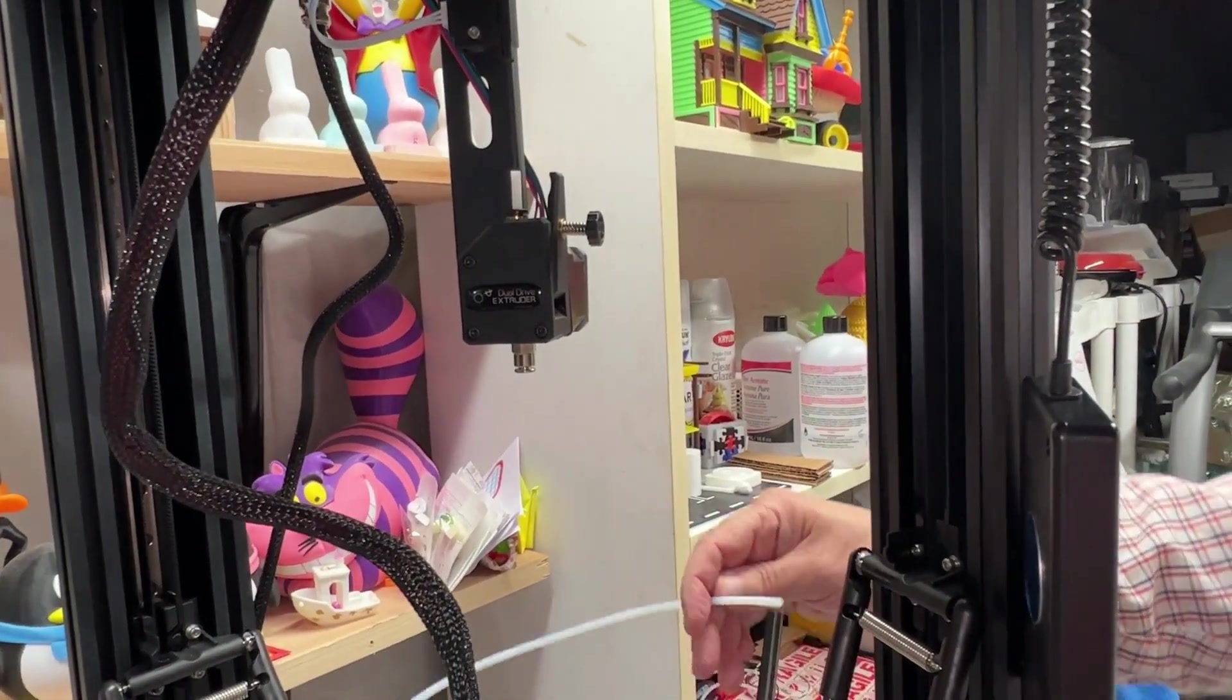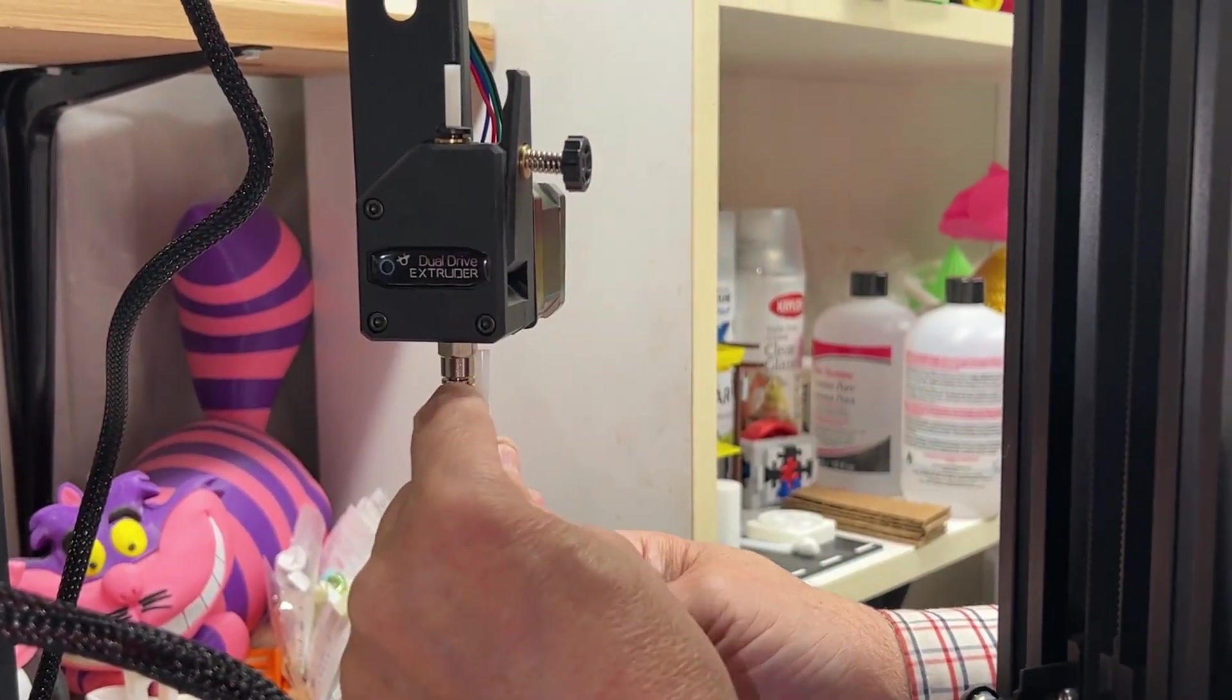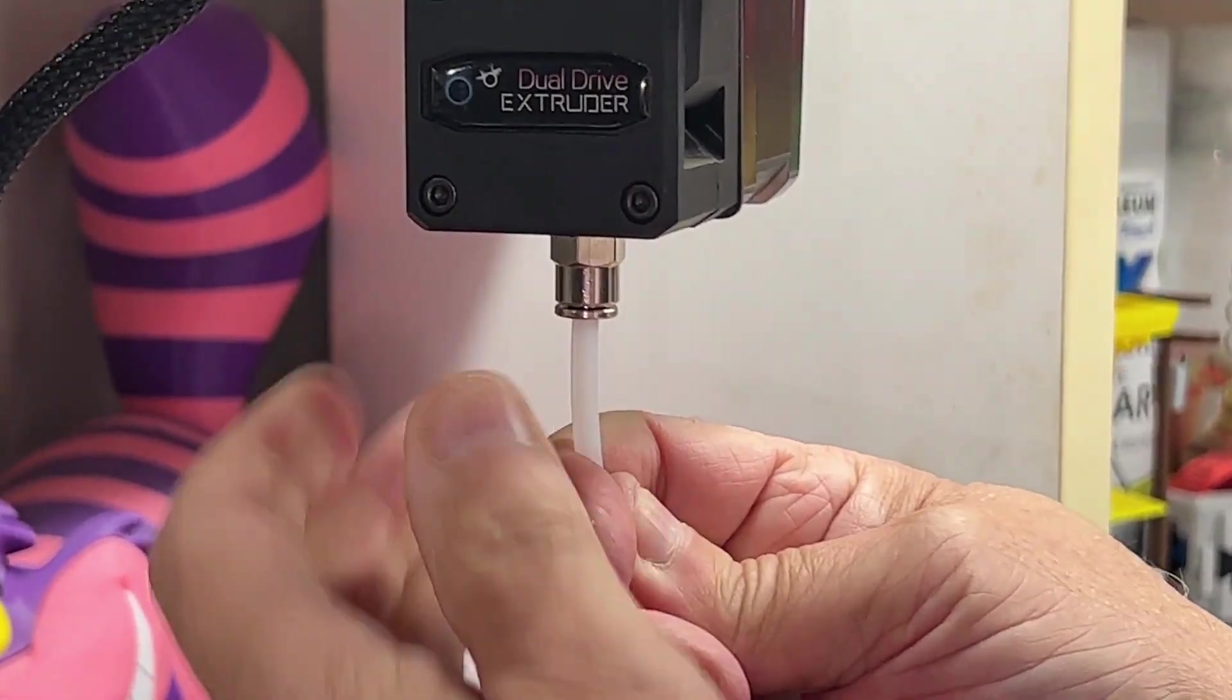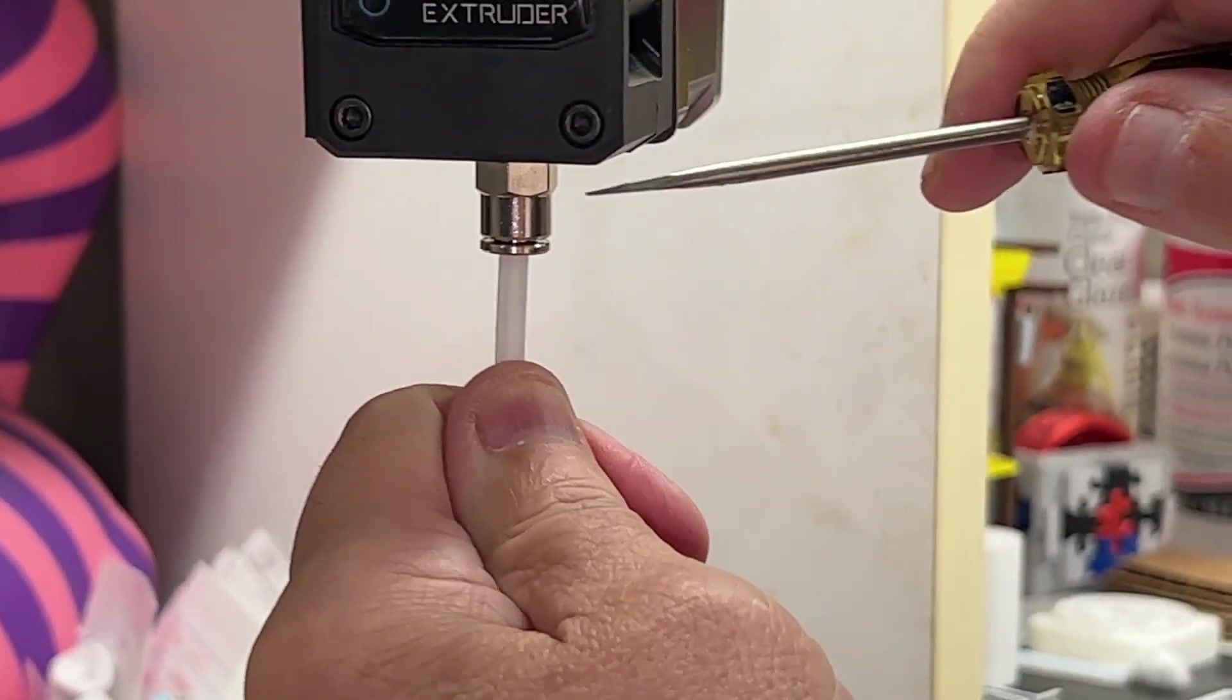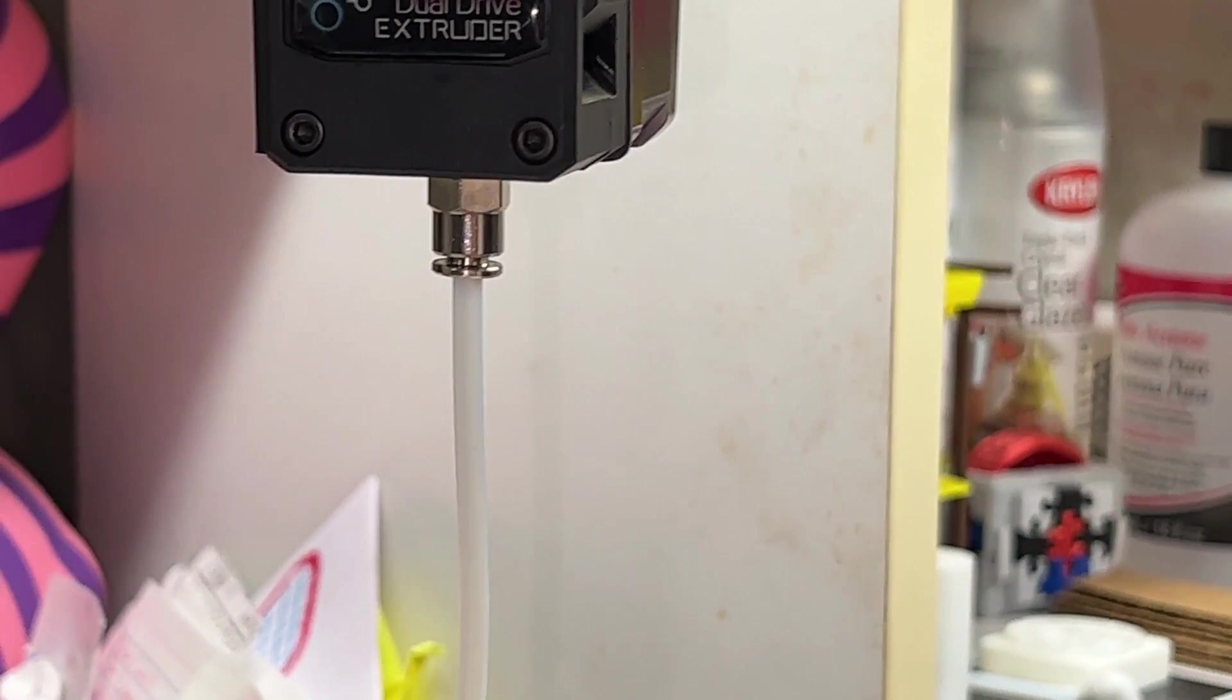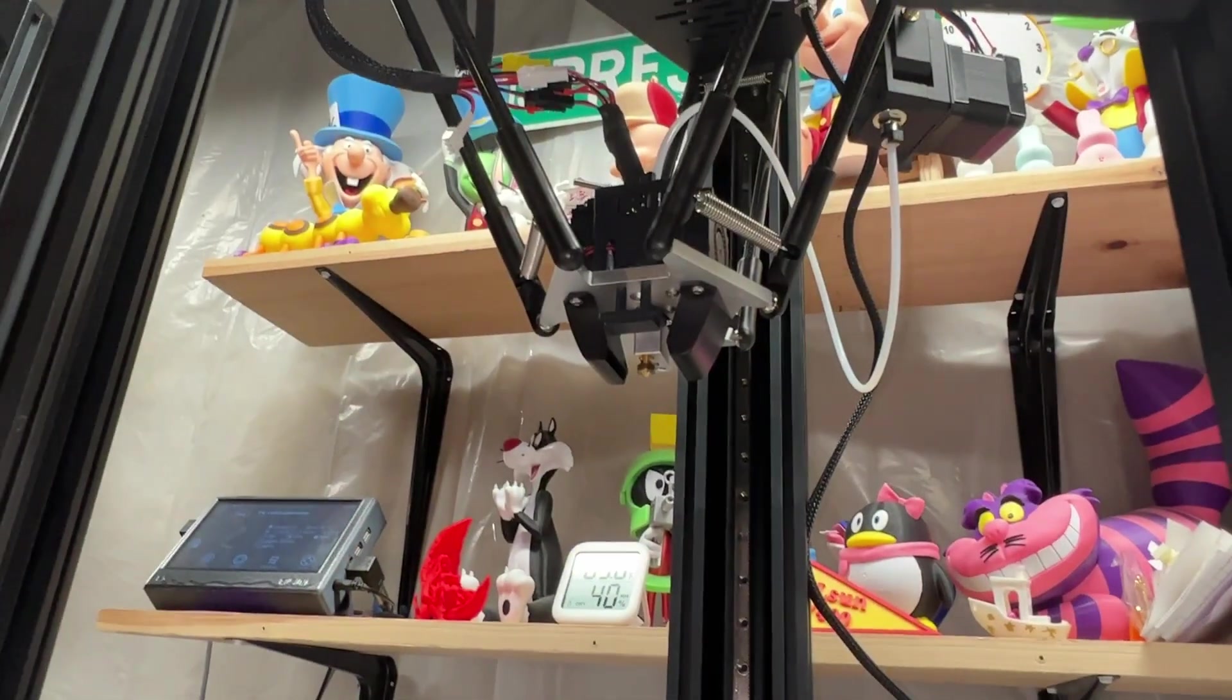So now we're going to connect the other end of the PTFE tubing into the extruder. And again, it's going to want to stop way short of where it's supposed to. So put it in, wiggle it around, and then you can feel it go the rest of the way in. And the same thing applies here: use that little screwdriver, pushing in the tube, pull that down until you get a space. Now you put the clip in, and it'll be perfectly set in there.